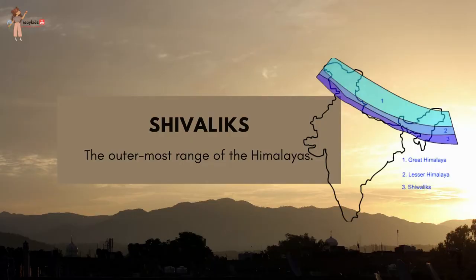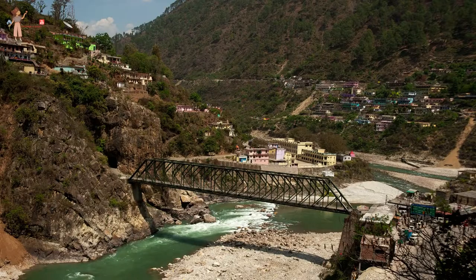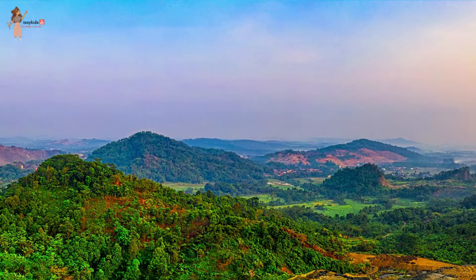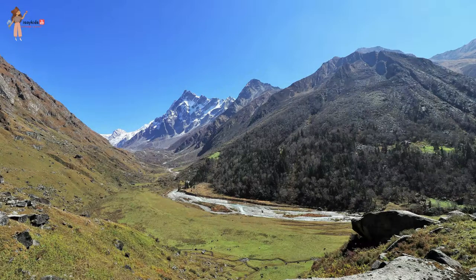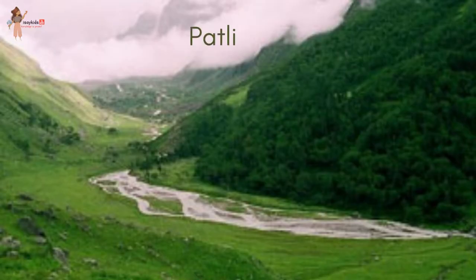The outermost range of the Himalayas is called the Shivaliks. They extend over a width of 10 to 50 kilometers with an altitude varying between 900 and 1,100 meters. These ranges are composed of unconsolidated sediments brought down by rivers from the main Himalayan ranges farther north. The valleys covered with thick gravel and alluvium between the Lesser Himalaya and the Shivaliks are known as duns. Dehradun, Kotli Dun and Patli Dun are some well-known duns.